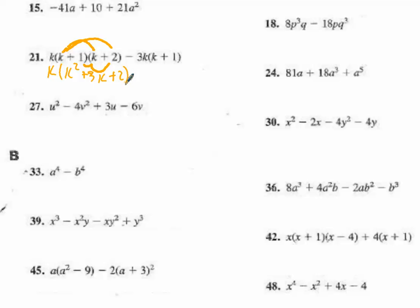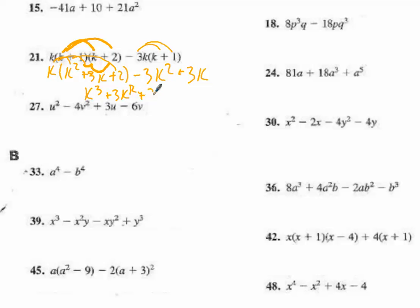And then over here I'm going to multiply this out. I'm going to get minus 3k squared minus 3k. Now I still have this k that I need to multiply out, so I'm going to end up with k to the third plus 3k squared plus 2k minus this piece here, which is 3k squared minus 3k.